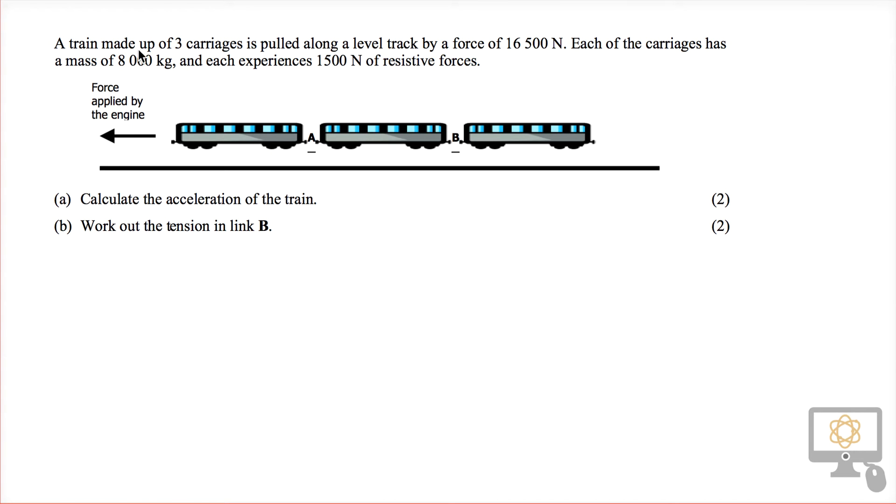It talks about a train made up of three carriages being pulled along a level track by a force of 16,500 newtons. So I'm just going to add in that force just here. This is our forward force of 16,500 newtons, the engine force.